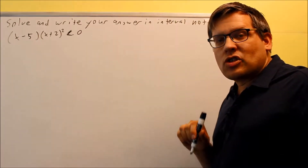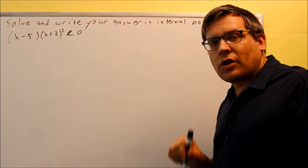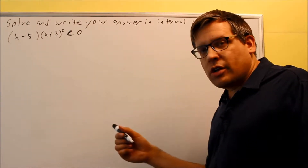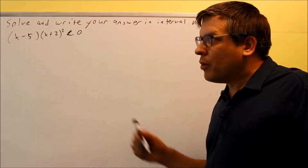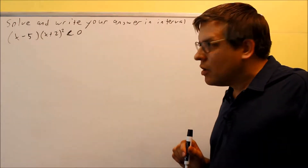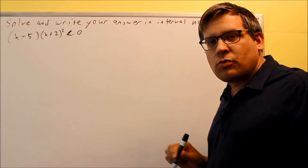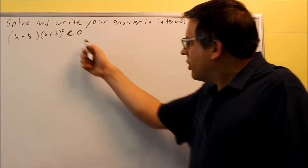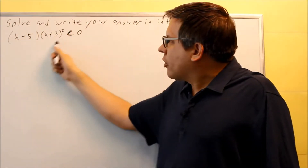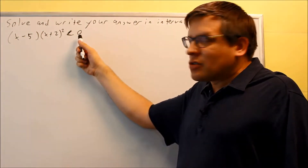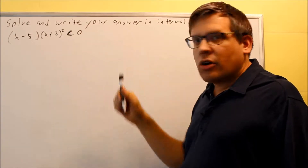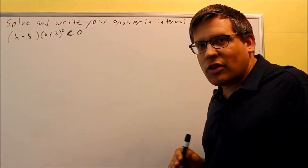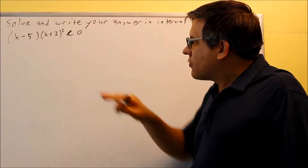The way to solve this is by using two different methods. The first method is a table method, which many textbooks include, and the other is a shortened version called the number line method. Both will get you the correct answer. What we're really doing is asking what part of the graph is below the x-axis, because less than 0 means we're looking at what part of the graph falls below the x-axis.